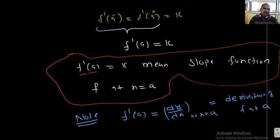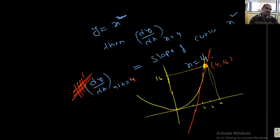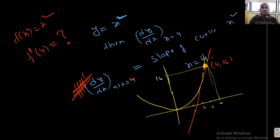F dash of a and dy by dx at x equal to a give the same meaning — notations are different but meaning is same. Similarly, if f of x equal to x square, then what is f dash of 4? The meaning is: what is the slope of this curve at x equal to 4, which is the point 4 comma 16? To find it, we need to find LHD and RHD, and whatever equal value we get is taken as f dash of 4.